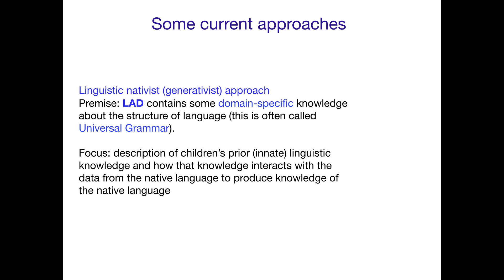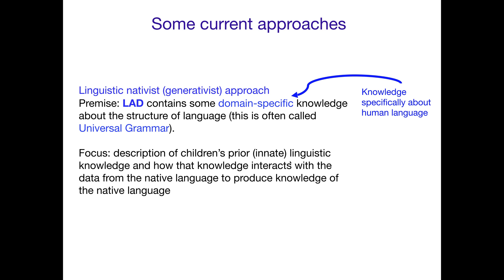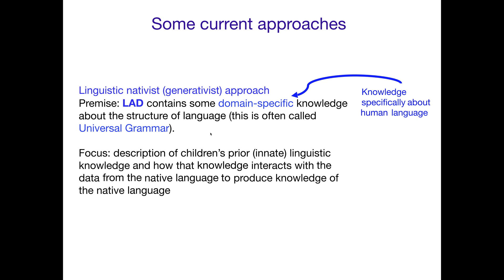Universal grammar is that language-specific knowledge that allows you to pick up whatever language you might be trying to learn. The focus is on the description of children's prior innate — hence the nativist point — linguistic knowledge, and how that knowledge interacts with the data from your native language to together produce a complete linguistic system for that native language. Domain-specific means knowledge specifically about human language, so this language acquisition device contains knowledge you only use for language acquisition, which is specific to the domain of language acquisition.